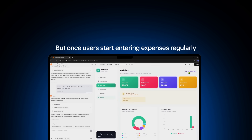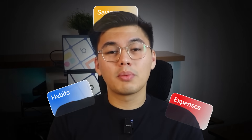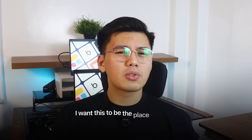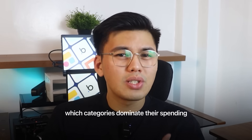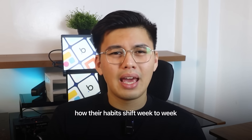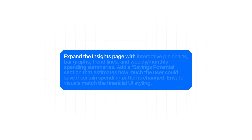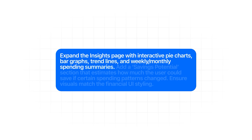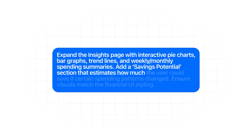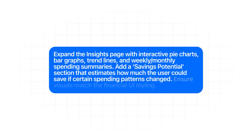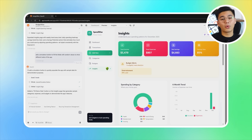Once users start entering expenses regularly, they will eventually want more than just a list — they will want to actually see their habits. This is where the insights page becomes the analytical center of the entire app. I want this to be the place people visit to understand which categories dominate their spending, how their habits shift week to week, and where potential savings might exist. To make this page genuinely useful, it needs strong visuals, clear summaries, and charts that turn raw numbers into something intuitive. Let's tell Base44 to expand the insights page with interactive pie charts, bar graphs, trend lines, and weekly and monthly spending summaries. Add a savings potential section that estimates how much the user could save if certain spending patterns changed. Ensure visuals match the financial UI style.